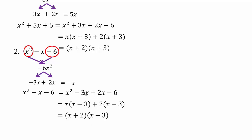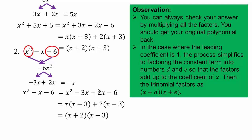Remember the trick: pull out the greatest common factor of the first two terms, and that same factor will appear in the second group. Adjust the sign and number on the outside so that when you distribute, you get the last two terms. Always check your answers by multiplying out using the distributive property — x times x is x squared, x times negative 3 is negative 3x, plus 2 times x is positive 2x, giving negative 1x, and 2 times negative 3 is negative 6.